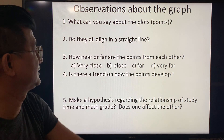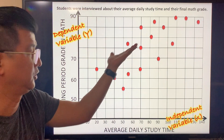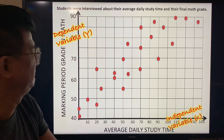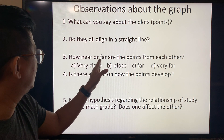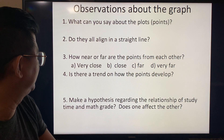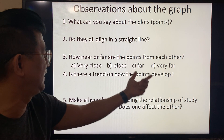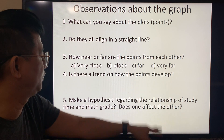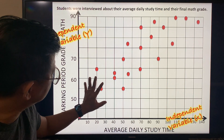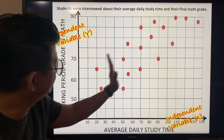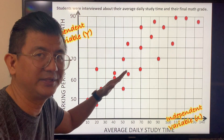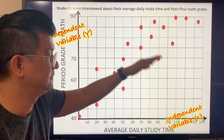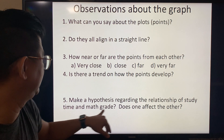Observations about the graph: the plots are all over the place — you could say they're scattered. They don't all align in a straight line. The points are close to each other. There is a trend: the points go up from left to right — going positive.